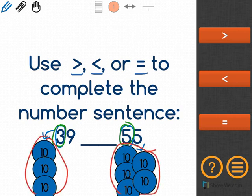I can tell that 55 has a greater value and that 39 has a smaller value. So I know that 39 is less than 55 because 55 has the greater value than 39.